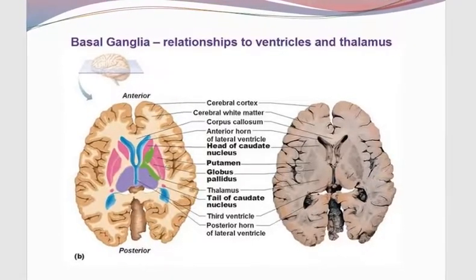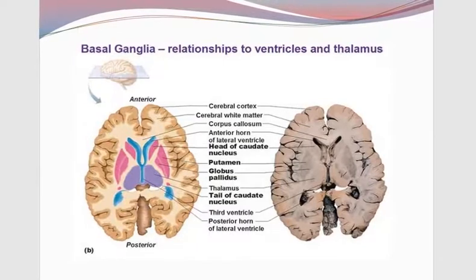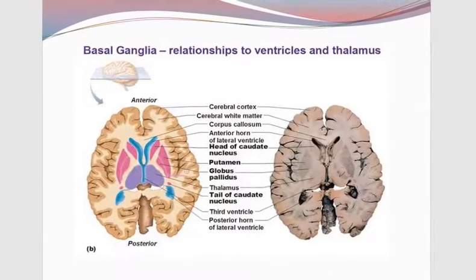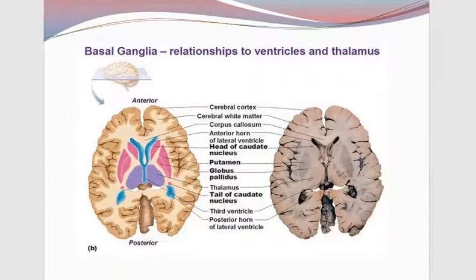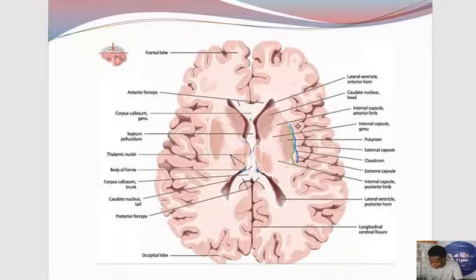Now I'll draw your attention to some new structures we've not mentioned yet: the claustrum, the external capsule, and the extreme capsule. This picture is showing the new set of structures. That includes the claustrum as well as the white matter immediately medial to it called the external capsule, and then another piece of white matter lateral to the claustrum called the extreme capsule. These are also common question points on the horizontal section across the brain.